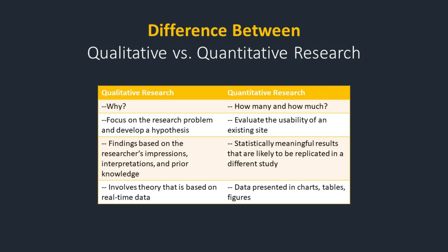Quantitative data is totally opposite — it quantifies the data by numbers: how many people have clicked this link, how many people have said yes, how many have said no, why the site is not performing as expected. It measures results statistically, giving you numbers at the end of the day.